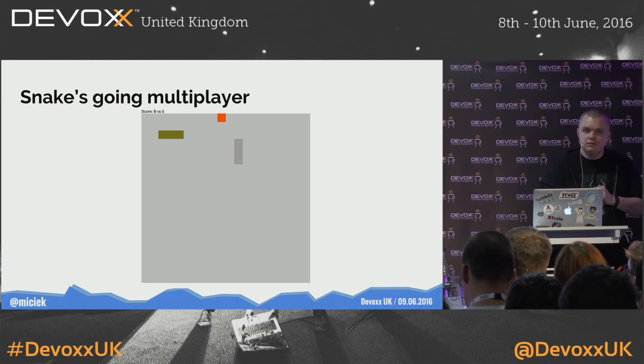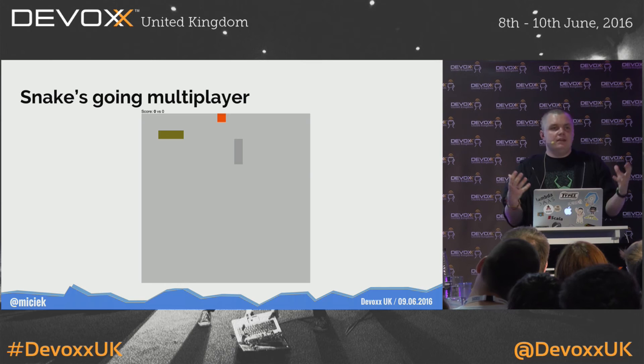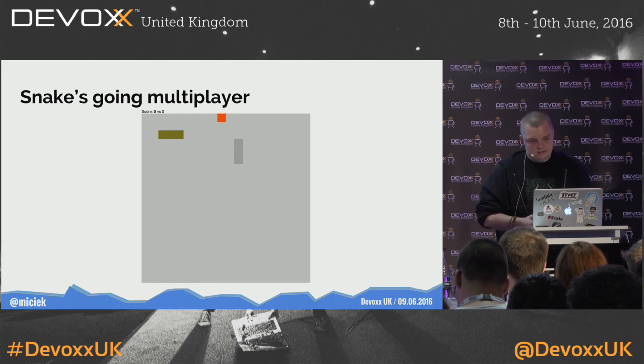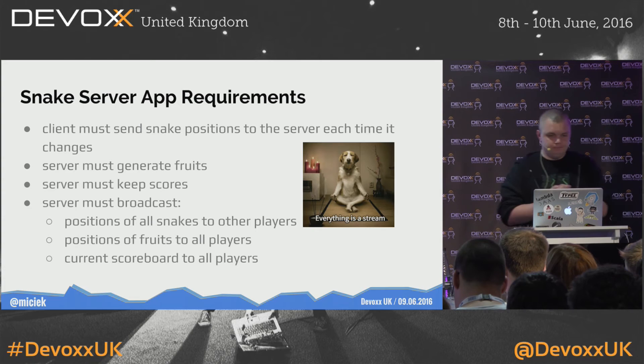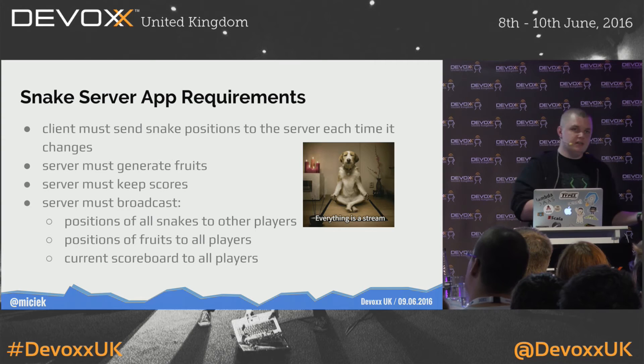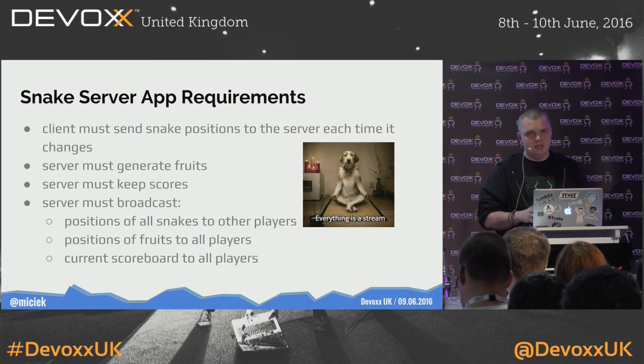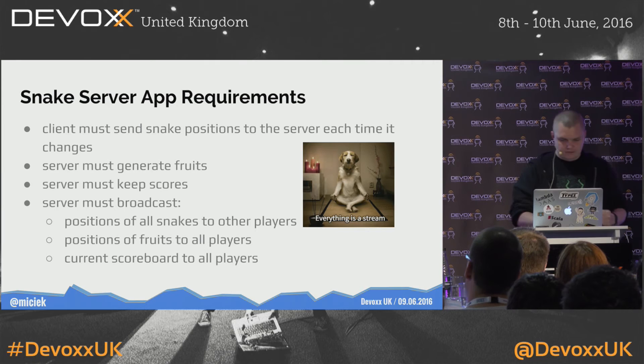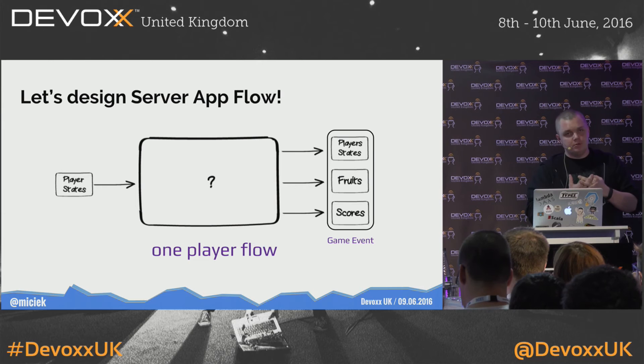Let's add a new player. We need a backend server application so that players can connect and share state — scores, things like that. The requirements: it must generate fruits, it must keep scores (fruits should be in one place), and it must broadcast all positions of other players, the fruits, and the scores to all players. Everything can be done using streams, because everything is a stream.